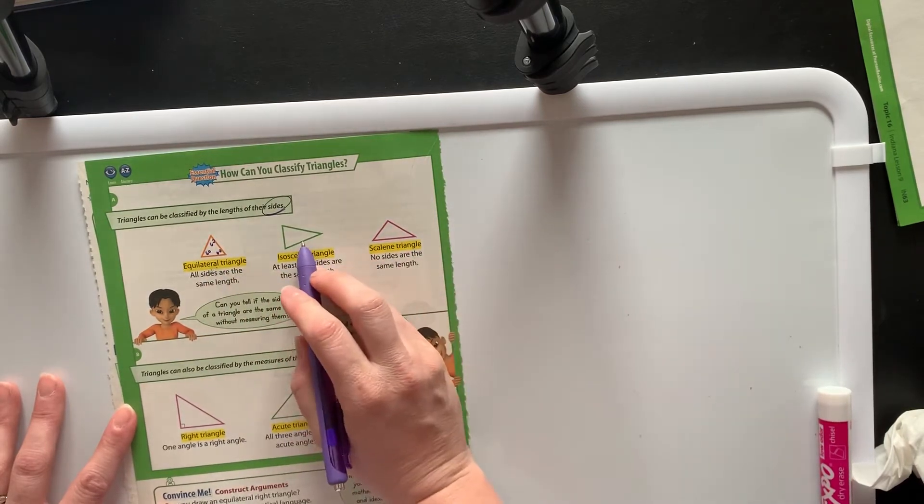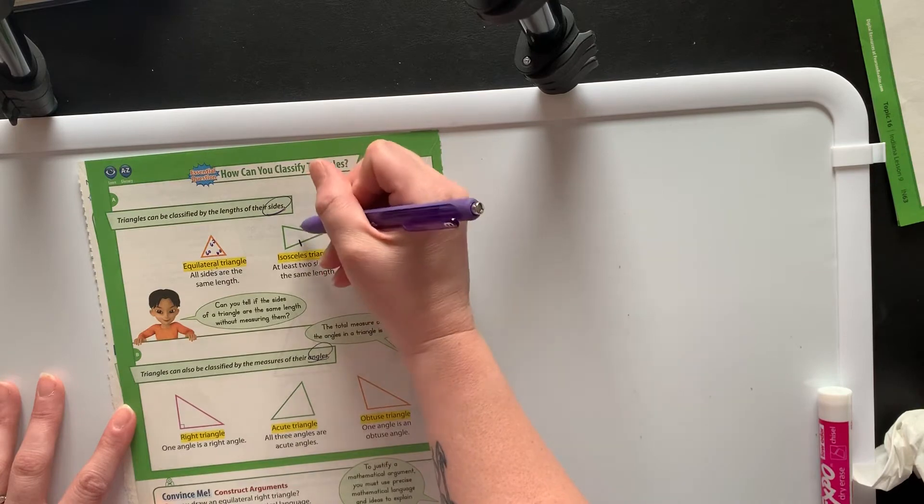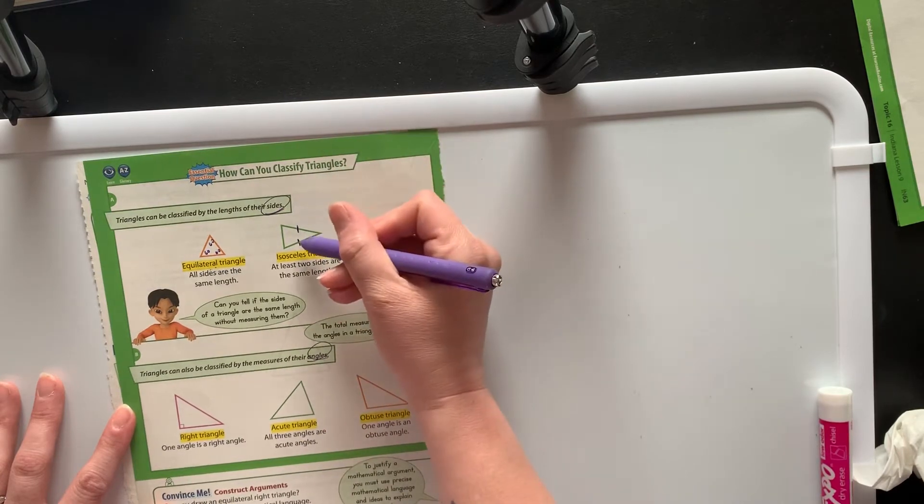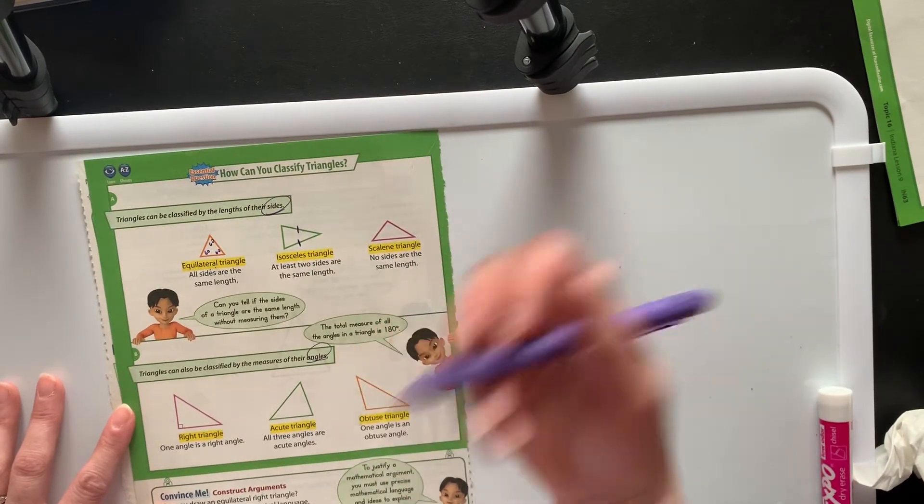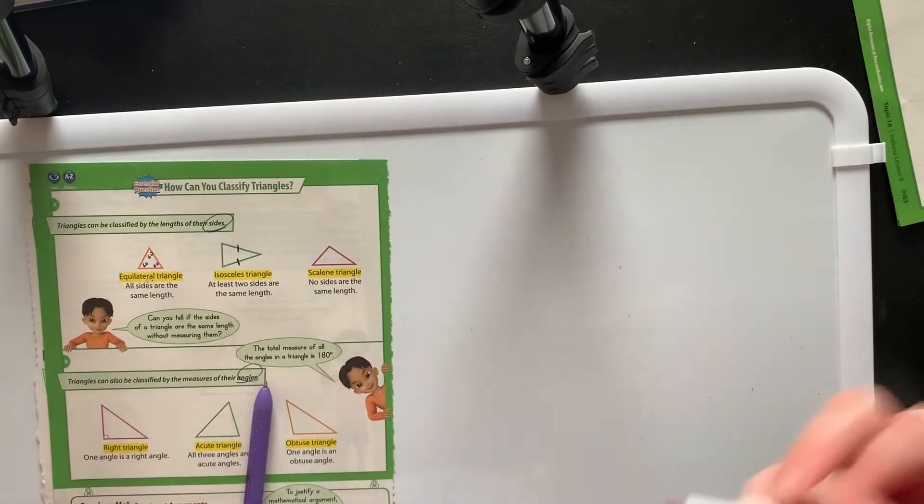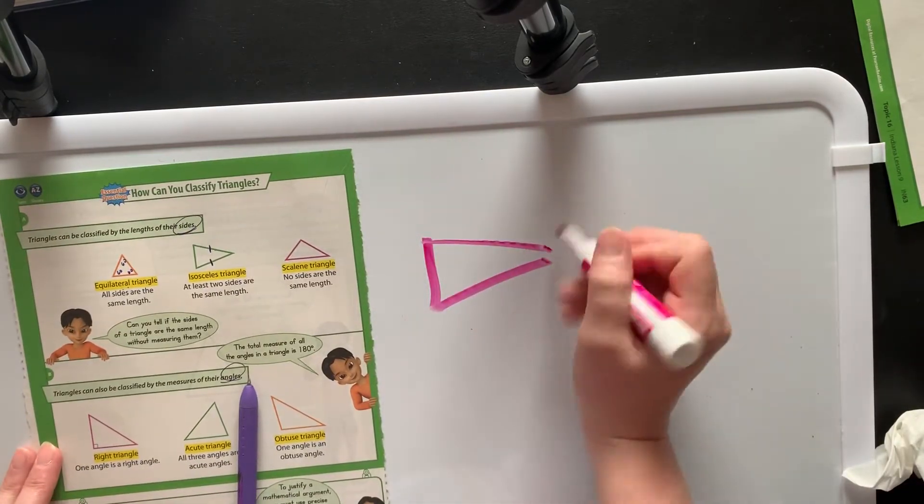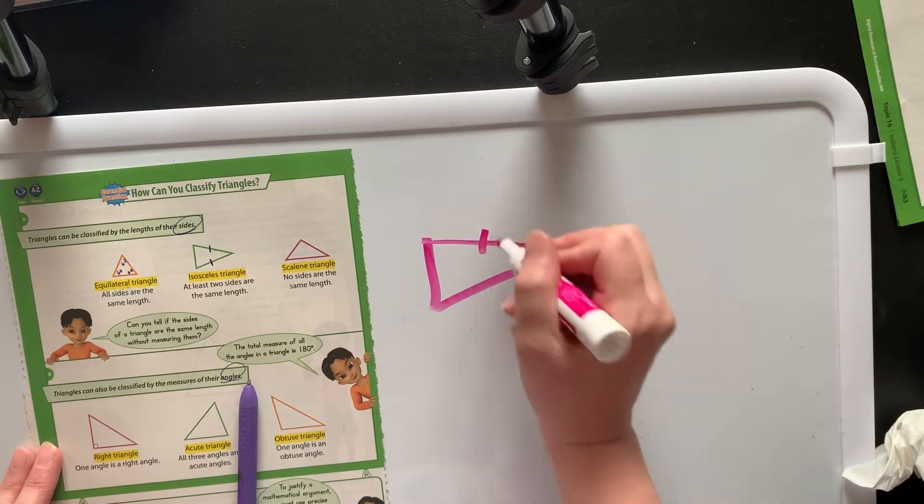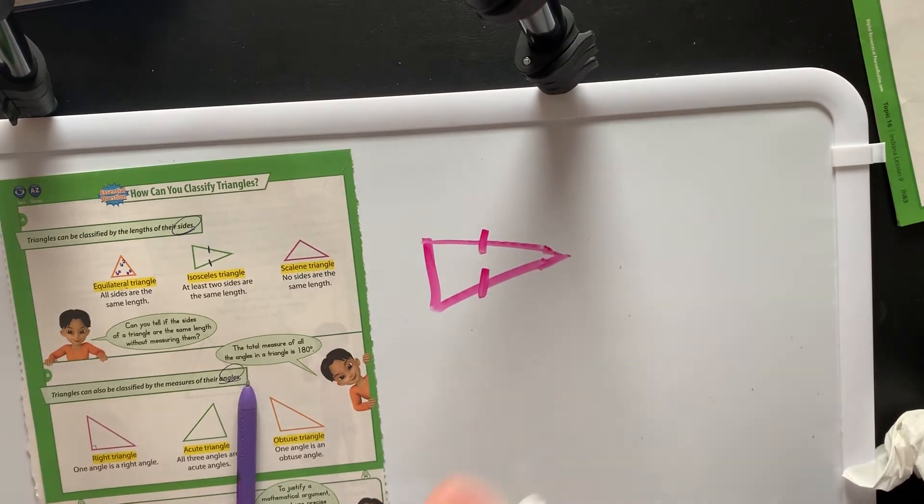An isosceles triangle has two sides that are same length. So usually we mark it with little lines. That means this side is the same length as this side. Or if you're drawing a triangle and you're like, I know this isn't perfect, but I'm doing the very best that I can here. This side is supposed to be the same length as this side. That's what that's about.